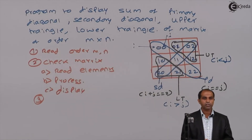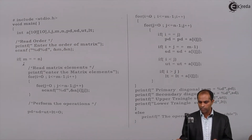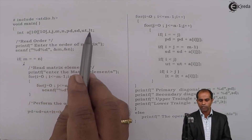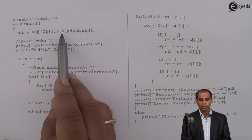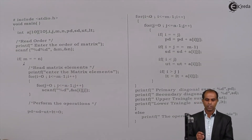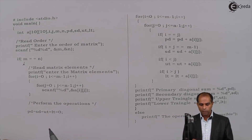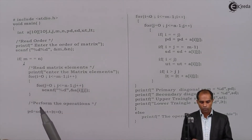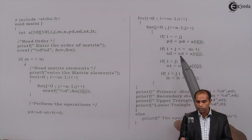Let's put a program to illustrate this. Declare a two-dimensional array, loop variables I and J, M and N for rows and columns, and counter variables PD, SD, UD, and LD for the sums. First read the order, then read the matrix elements using a nested for loop, then set the counter variables PD, SD, UD, LD all equal to zero. Once all variables are set to zero, start doing the operations.